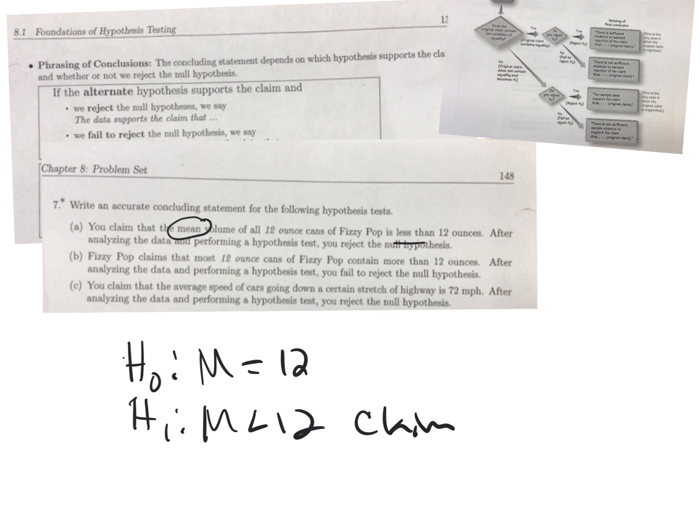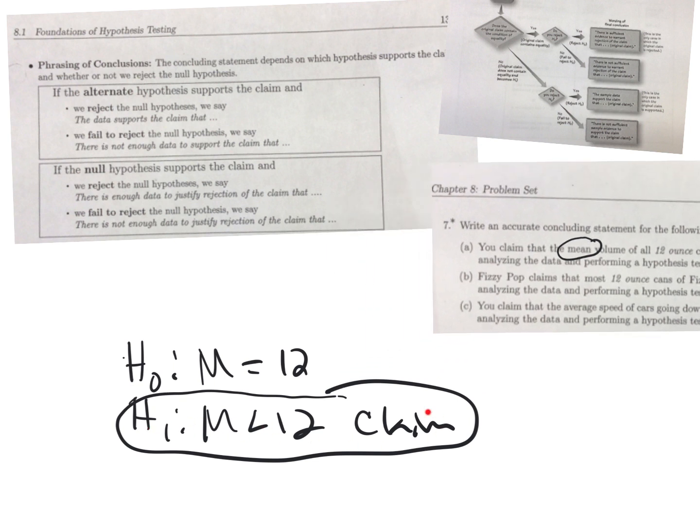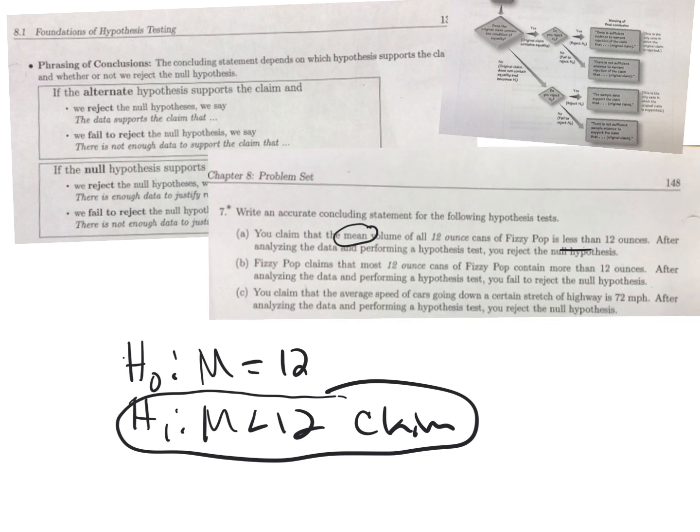After analyzing the data and performing a hypothesis test, you reject the null hypothesis because we've got a large negative test statistic and the p-value is small, smaller than whatever the cutoff is. Looking at Dr. Stevens' reading, because I identified the alternative hypothesis as the claim, I'm going to use this section. We rejected H0, so the data supports the claim that the mean volume of all cans of Fizzy Pop is less than 12 ounces.